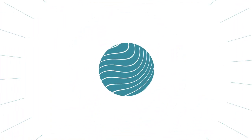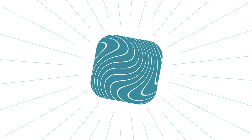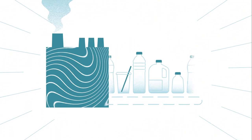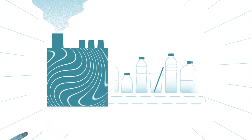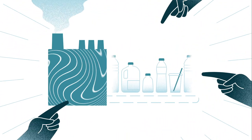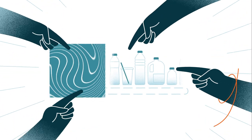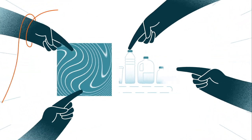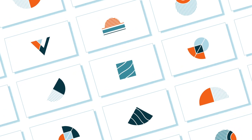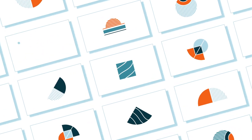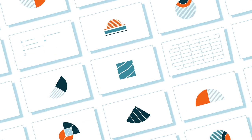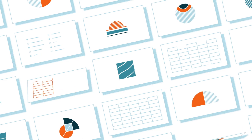The idea is simple. To truly solve the plastic problem, we are calling on the world's top polluting companies to stop producing so much unnecessary single-use plastic in the first place. But in order to know who the top polluting companies are, we need your help to record data on plastic waste in your community.